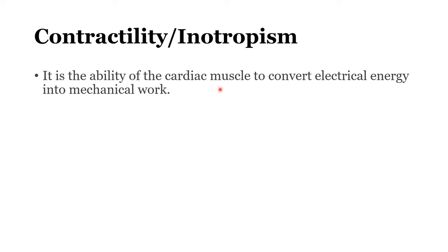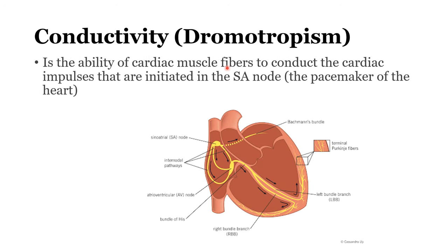Contractility is the ability of the cardiac muscle to convert electrical energy — that is, the action potential — into mechanical work in the form of contraction of the muscle. Conductivity is the ability of the cardiac muscle fibers to conduct cardiac impulses that are initiated in the SA node, which is the primary pacemaker of the heart. Cardiac impulses are conducted through a specialized conducting system from the SA node to the AV node, to the bundle of His, and the Purkinje fibers, helping in the spread of electrical activity to adjacent tissues enabling contraction of the heart.